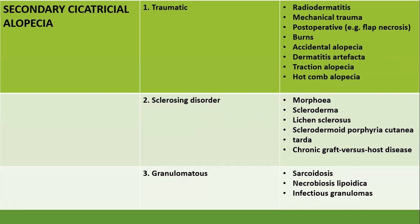Sclerosing disorders associated with scarring alopecia include morphea, scleroderma, lichen sclerosis, sclerodermoid porphyria cutanea tarda, and chronic graft-versus-host disease. Granulomas may also result in cicatricial alopecia — primarily sarcoidal granulomas, necrobiosis lipoidica, and infectious granulomas like cutaneous leishmaniasis or lupus vulgaris.